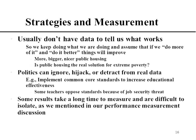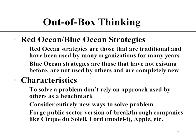Strategies and measurement: we usually don't have the data to tell us what works, so we need to focus on having the right data — what outcomes are occurring or not occurring, how we measure them, and how often. Politics can overcome data — for example, implementing common core standards to increase educational effectiveness was opposed politically by many teachers due to job security threats, making the focus shift to resistance rather than measurement. Some results take a long time to measure, so we have to be patient and use intermediate measures that add up to the slower, outcome-related measures.